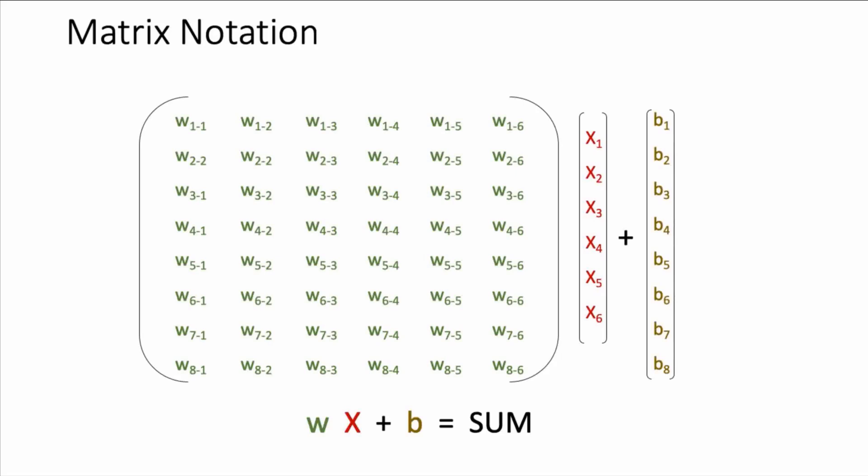Here, the matrix on the right is only a single column and it's also known as a vector. Taking this weighted sum between rows and columns is also known as the dot product.